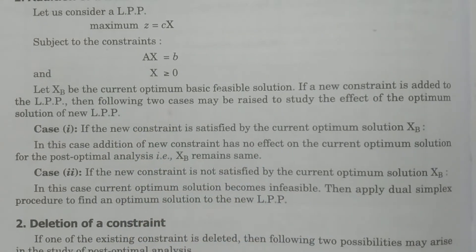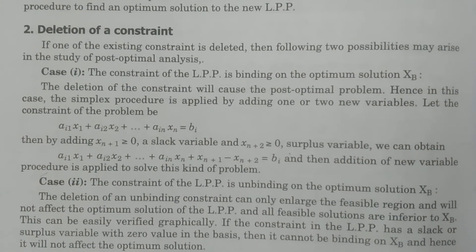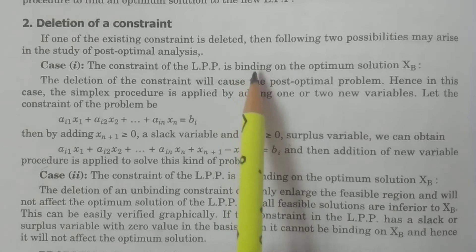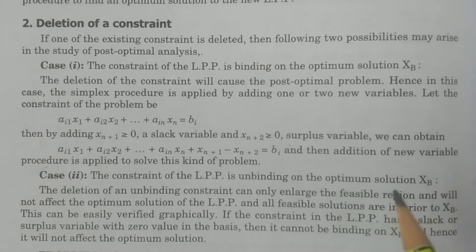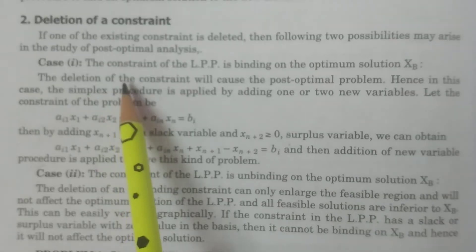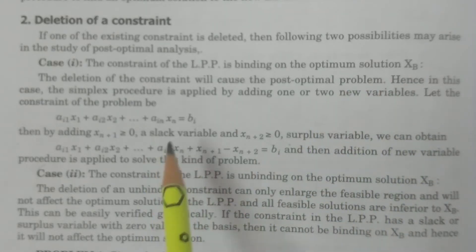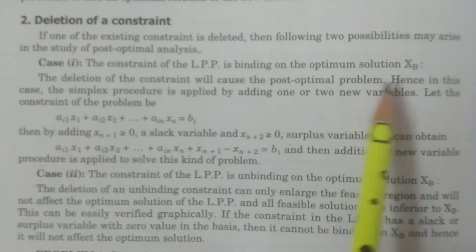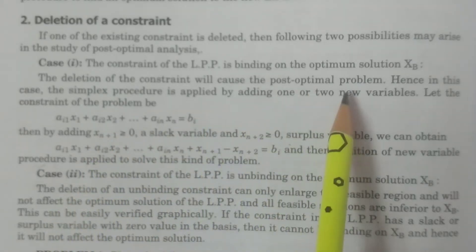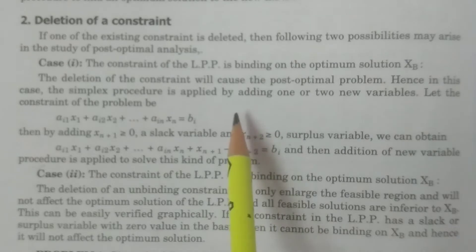Now let us discuss deletion of a constraint. The first possibility is that the constraint is binding on the optimum solution. If we delete a binding constraint, there will be a binding effect on the optimum solution. The deletion of a binding constraint will cause a post-optimal problem, because it will affect the optimum solution.